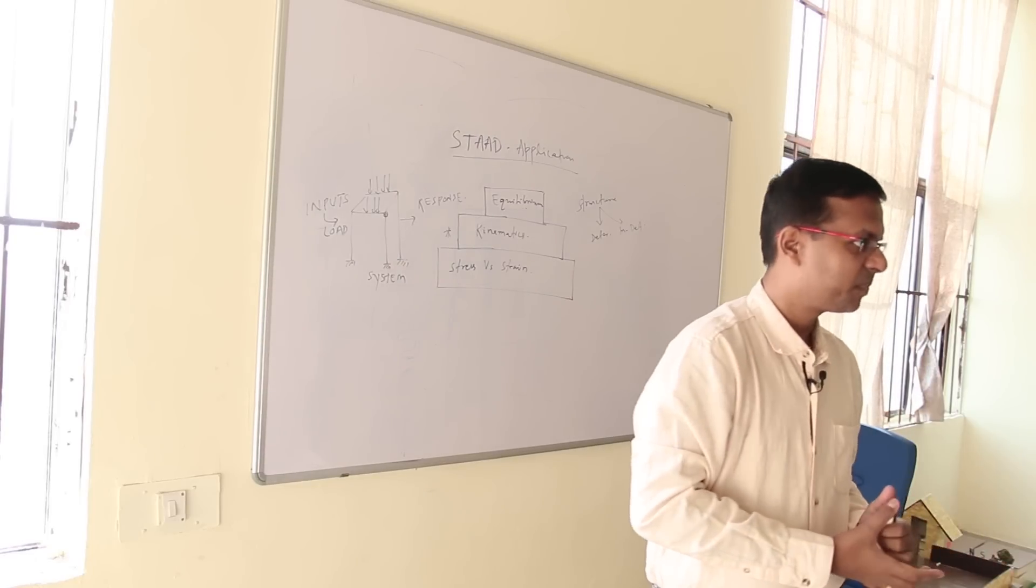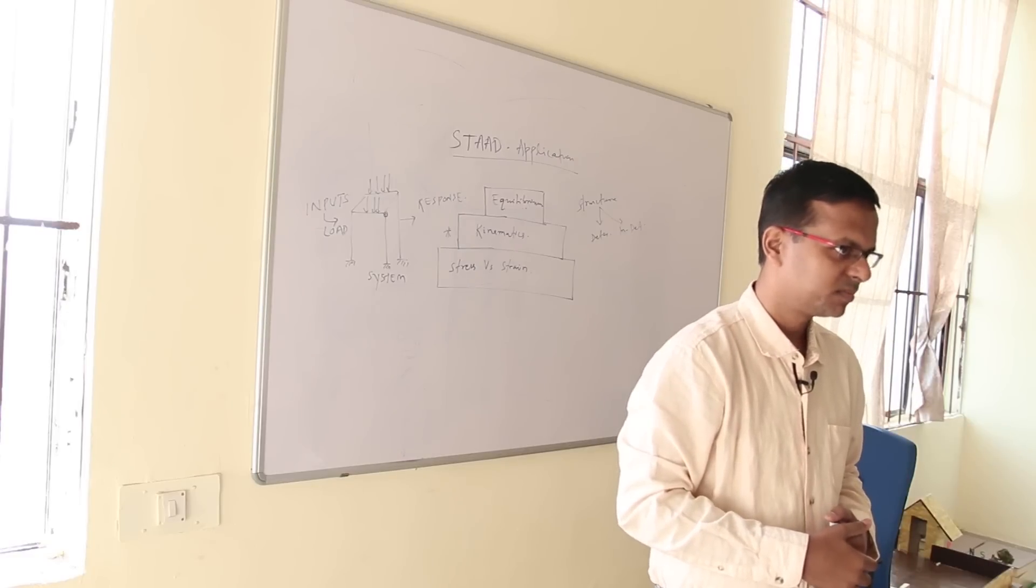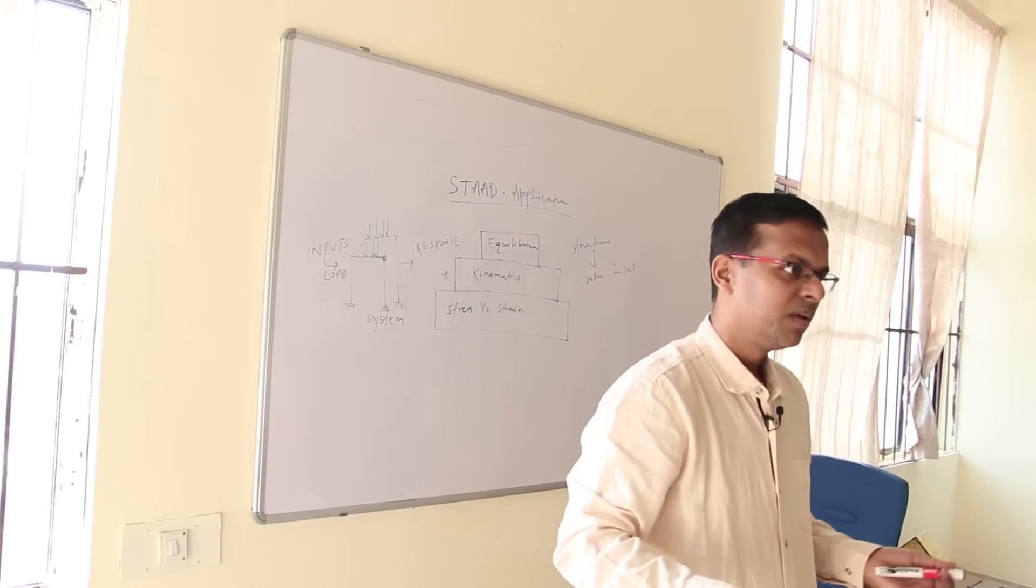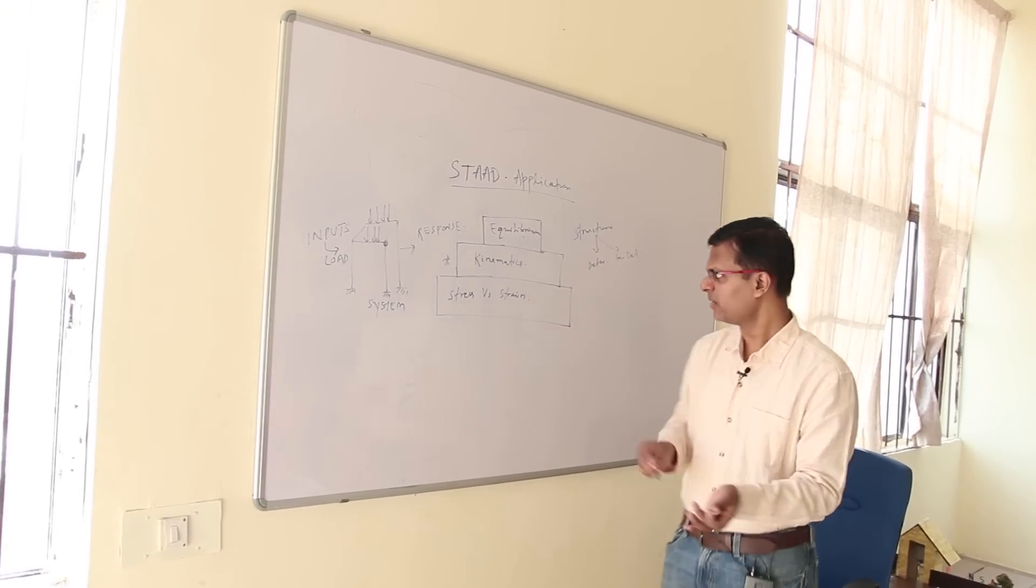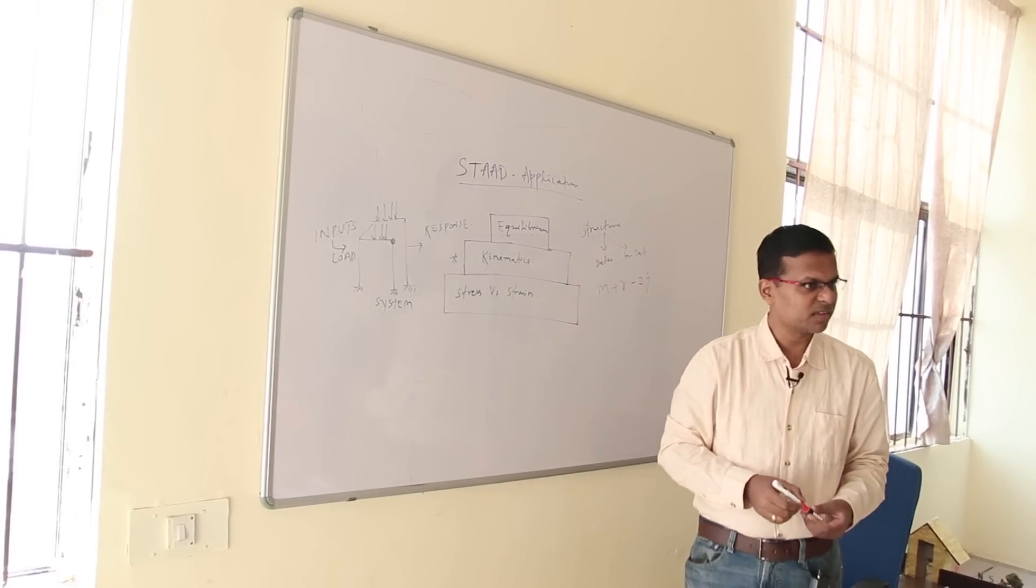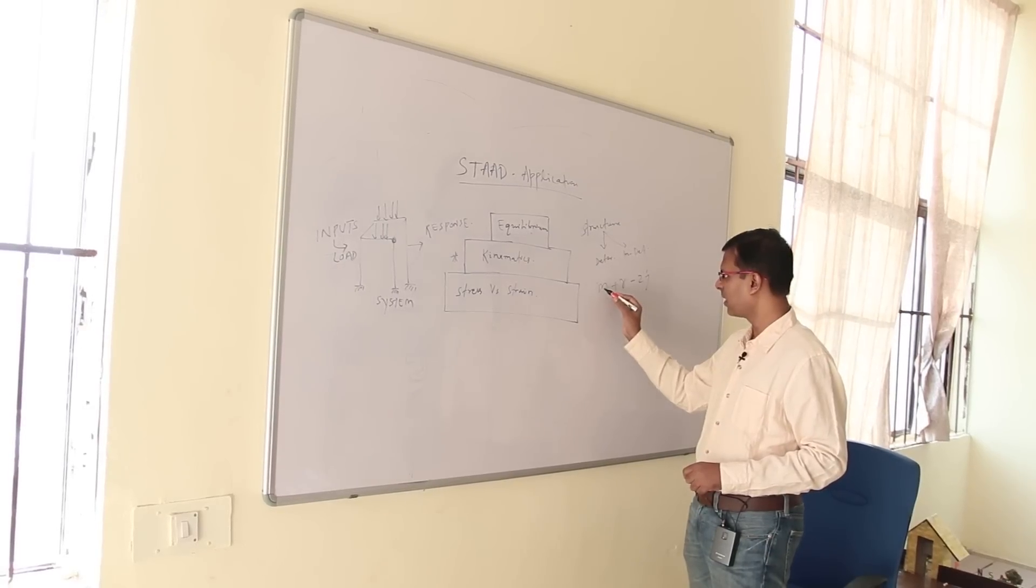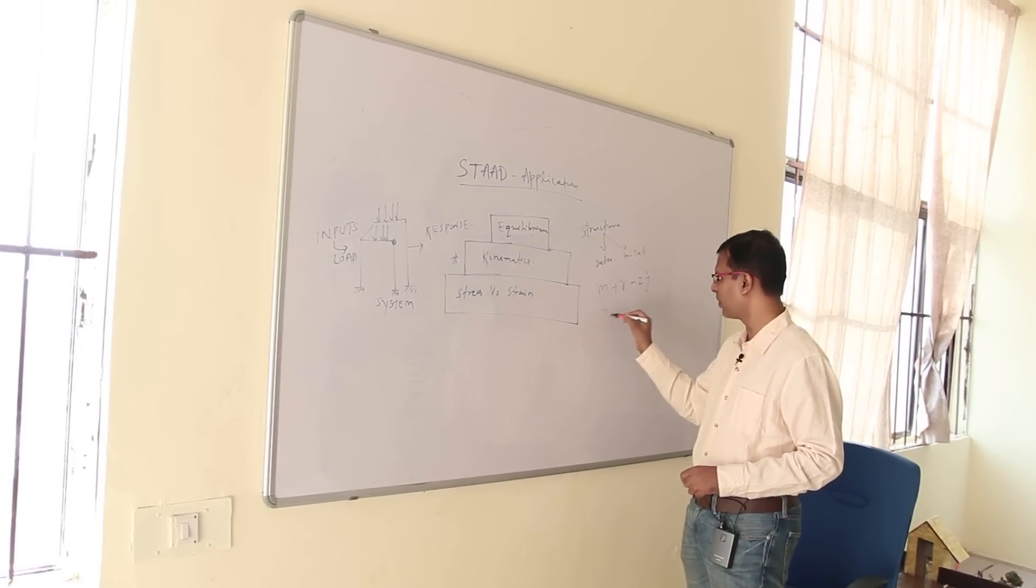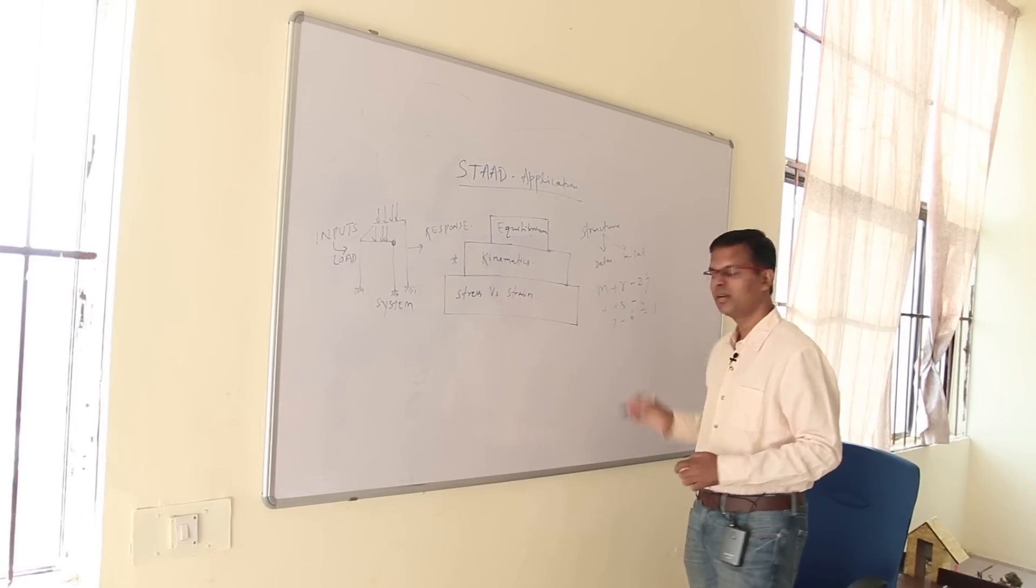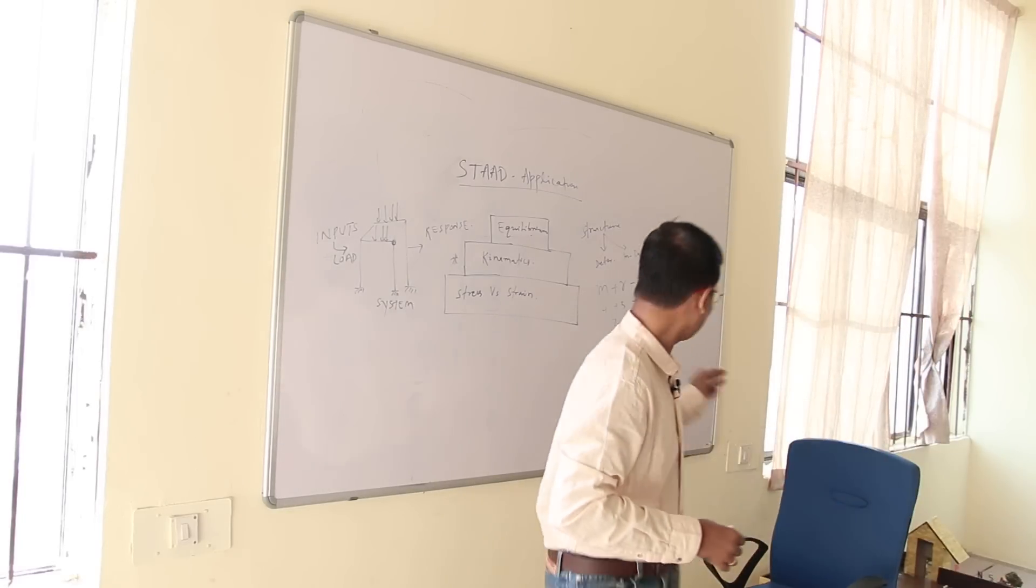So in case of an indeterminate structure, how do you solve for the unknowns? See, what is the structural indeterminacy? M plus R minus 2j. If this is the case and my structural indeterminacy is, suppose here I have members and reactions, let's say 4 and 3, and joints are 3. So this is 6, 4 plus 3 is 7, minus 6 equal to 1. My indeterminacy is 1. So in that case, how do you solve for that one extra unknown?